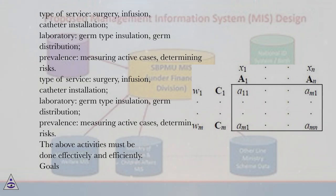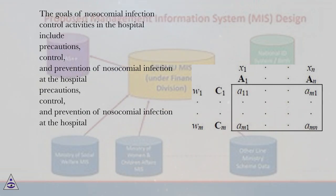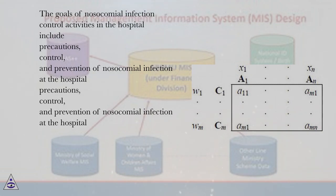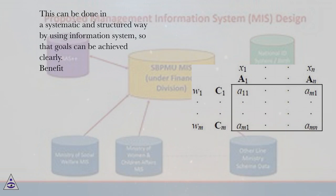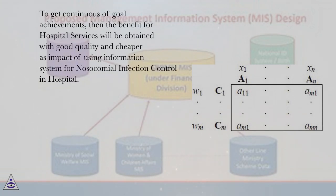The above activities must be done effectively and efficiently. The goals of nosocomial infection control activities in the hospital include precautions, control, and prevention of nosocomial infection. This can be done in a systematic and structured way by using an information system, so that goals can be achieved clearly.